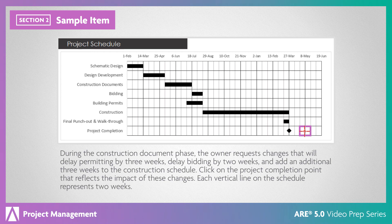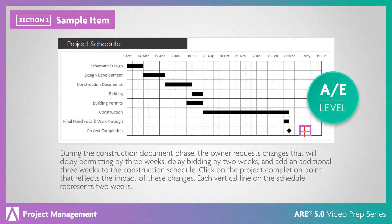Delays to permitting will cause other items to be delayed, and the overall schedule will need to be adjusted. The delays to bidding and permitting are concurrent, so they push back the start of construction by three weeks. The construction timeline must be extended by an additional three weeks. The new completion date will be six weeks later. This is an AE-level item because it requires you to analyze the impact of each of the delays and determine their effect on the overall project completion.